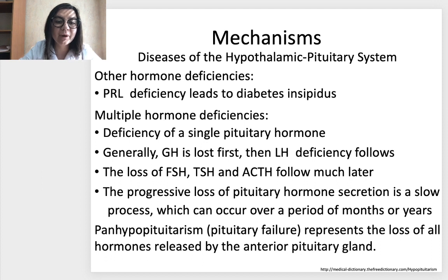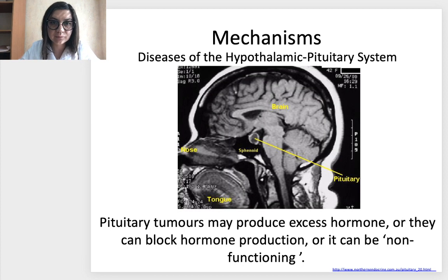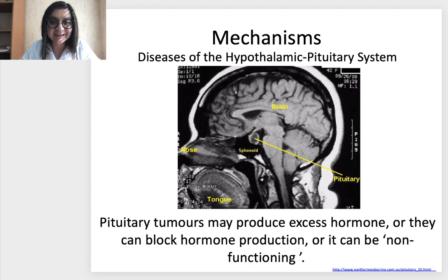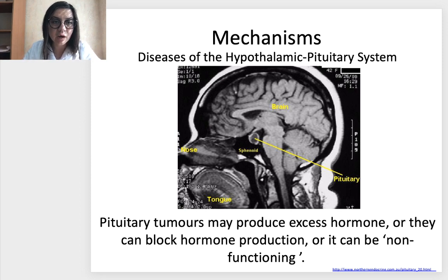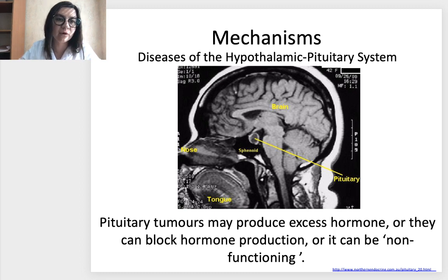Panhypopituitarism, or pituitary failure, represents the loss of all hormones released by the anterior pituitary gland. Pituitary tumors may produce excess hormones — overproduction — or they can block hormone production, or be non-functioning. In all cases, whether deficiency, overproduction, or even normal hormone levels, pituitary tumors can be present. This is not connected with the function of the hormone.